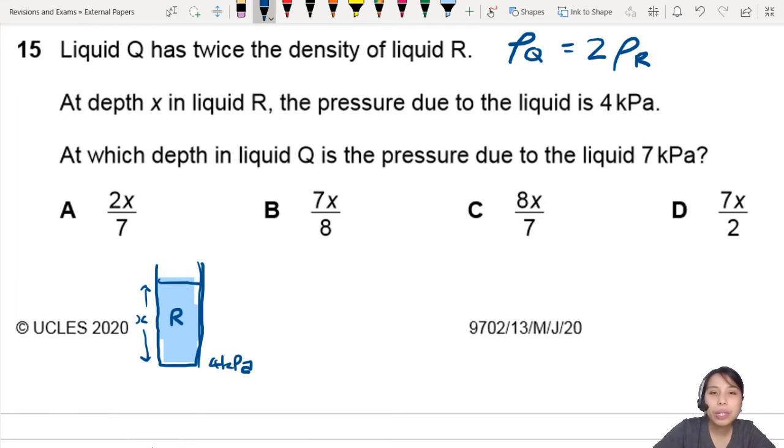At which depth in liquid Q is the pressure due to the liquid 7 kilopascals? So I don't know how high this thing is, but there's a certain water level. And you are deep in the water. And at that certain level, you have 7 kilopascals. And we don't know what the depth is. I'm going to call it D, D for depth.